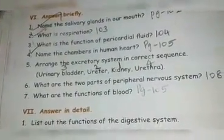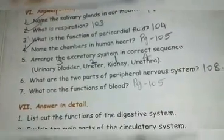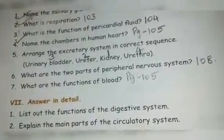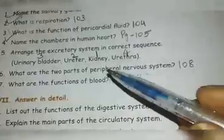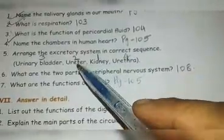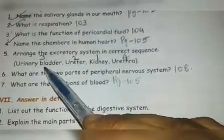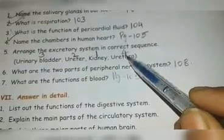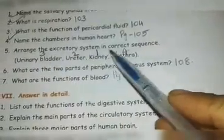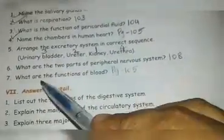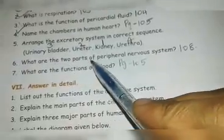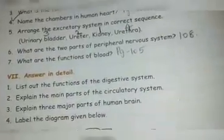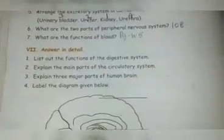Fifth question: arrange the excretory system in correct sequence. The correct order is: first, kidney; second, ureter; third, urinary bladder; and last, urethra. So the answer is option three, two, one, four.